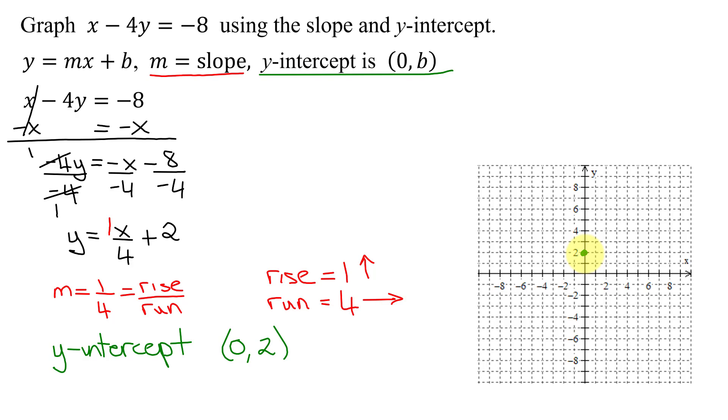So I start at my y-intercept, then I go up 1 to the right 4. So starting here, you go up 1 and to the right 1, 2, 3, 4.